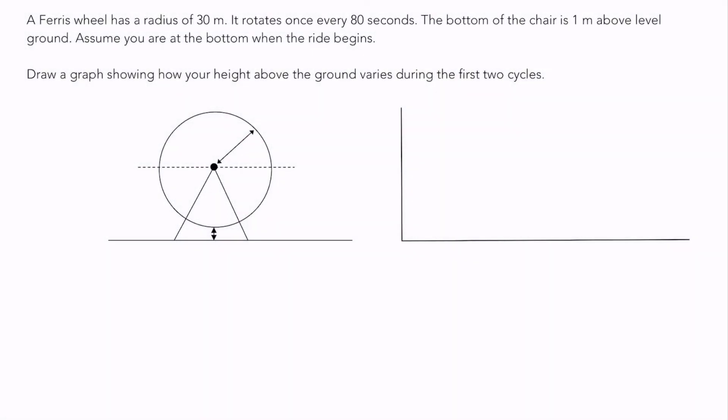In this problem, we're going to look at a Ferris wheel and come up with an equation describing the motion of someone at some point on the Ferris wheel. There are a few segments to this question; I'm just going to look at one of them at a time in separate videos.